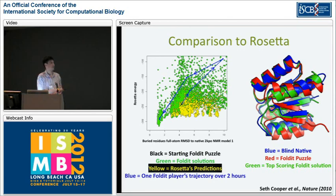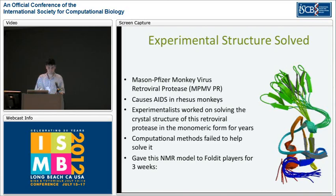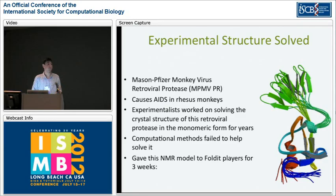The top-scoring Foldit solution — the green model superimposed onto the native structure — was a very exciting proof of concept. But we wanted to apply this to a real-world problem. The Mason-Pfizer monkey virus retroviral protease causes AIDS in rhesus monkeys, and experimentalists had been trying to solve the crystal structure in its monomeric form for over 15 years. All the conventional methods had failed.